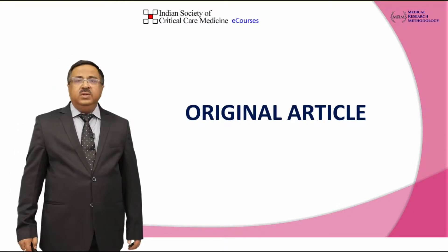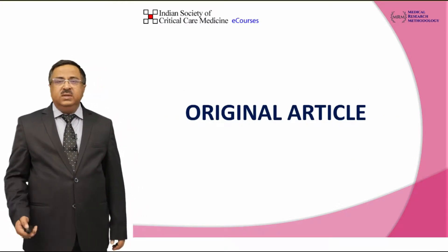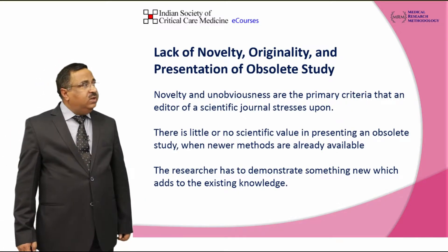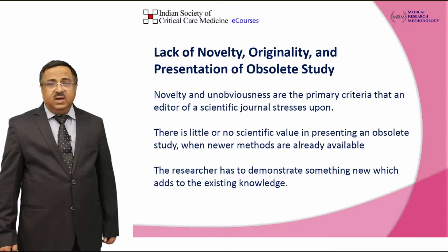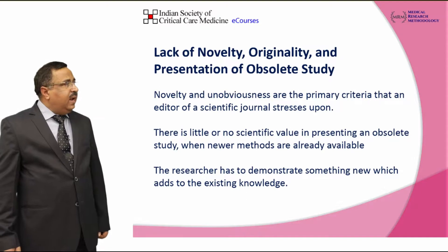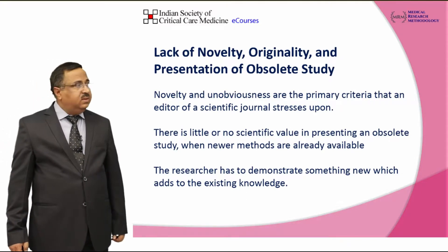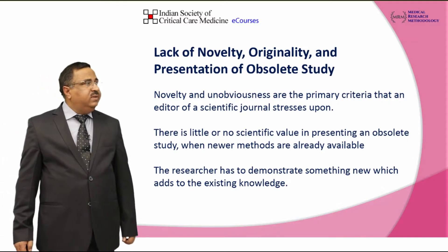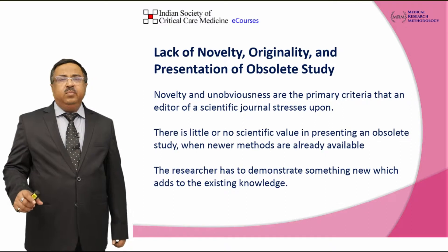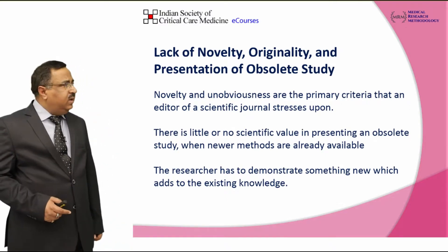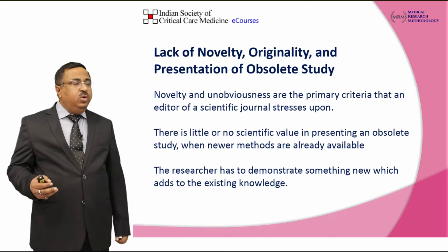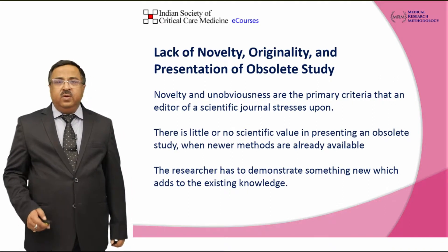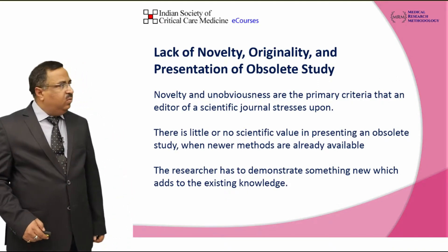First we will go through the original articles and what are the common causes, then we will see for the review articles. Lack of novelty, originality, and presentation of an obsolete study are important causes. Novelty and unobviousness are two very important primary criteria that an editor of a scientific journal stresses upon. There has to be some new message and new add-ons to the existing knowledge, and then it becomes very obvious that your article will be accepted.